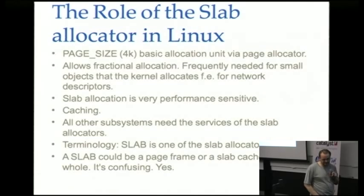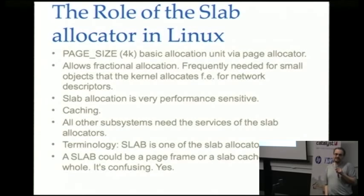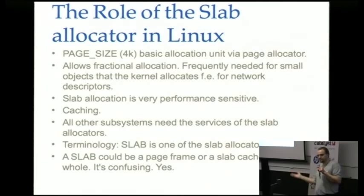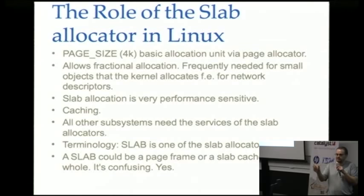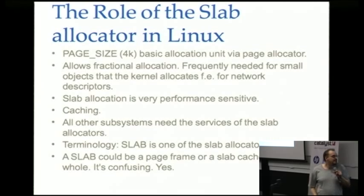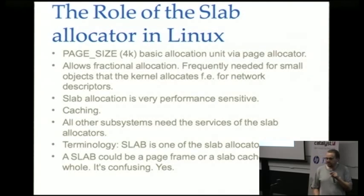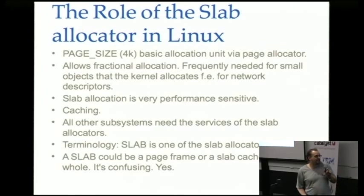If you want a small object for storing some metadata, you have to go to the slab allocator. It gets some larger blocks from the page allocator and hacks them into pieces, sharing them with various subsystems that need these small pieces. For example, for network operations you need a small block to store network information, or a scatter-gather list for network packets. The speed of the slab allocator is frequently important for the performance of other subsystems.